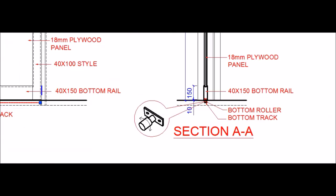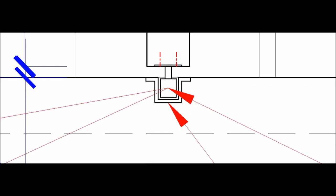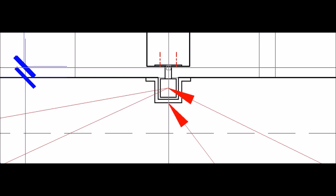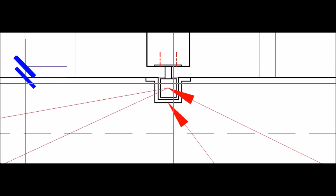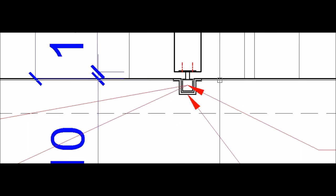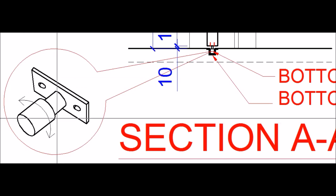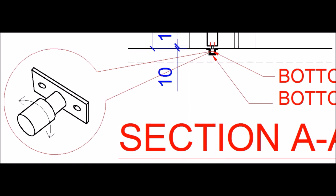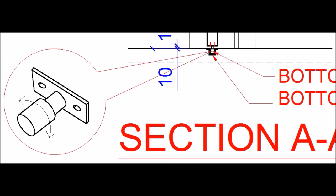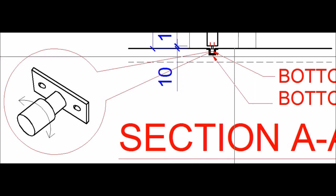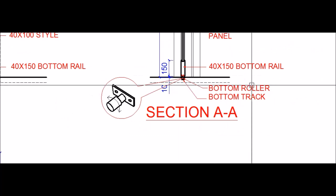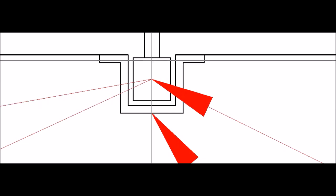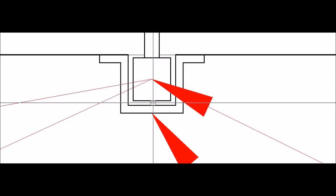The bottom track can also be seen in the section, showing the track inside the flooring. The lower part of the door shutter is provided with a roller that is allowed to move only horizontally, keeping the door within the track and preventing lateral motion. Note that the roller does not carry any load — no load is transferred from the roller to the bottom track.